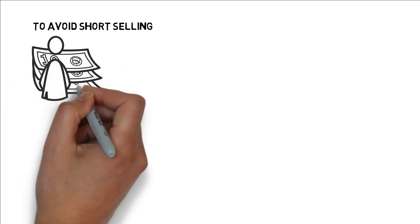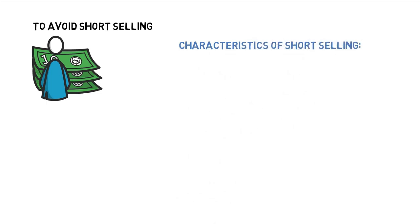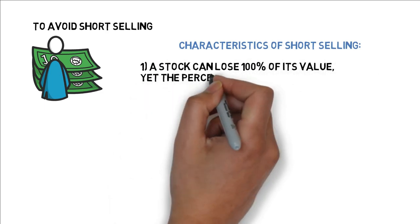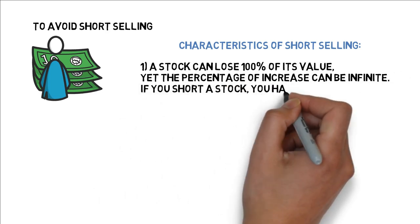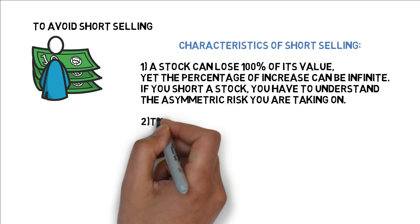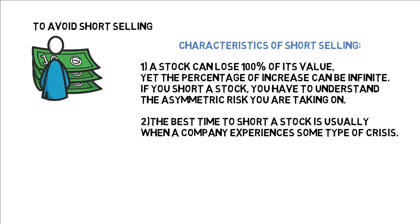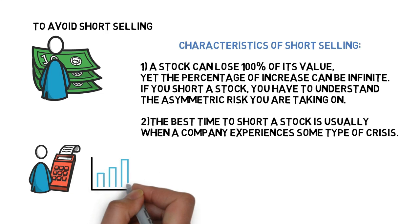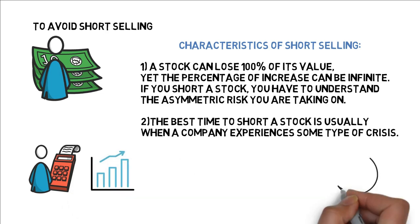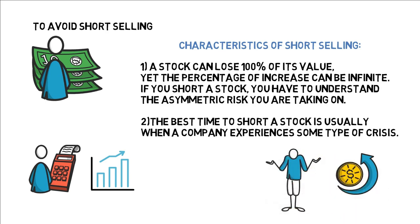He also advised others to avoid short selling like several other value investors like Manish Pabrai, Charlie Munger, and Guy Spear. These are three characteristics of short selling that people may overlook. Number one, theoretically a stock can lose 100% of its value, yet the percentage of increase can be infinite. If you short a stock, you have to understand the asymmetric risk that you're taking on. Number two, the best time to short a stock is usually when a company experiences some type of crisis, such as the discovery of accounting fraud, insolvency, or something else. Often, fraud exists for a long time in a company while the stock continues to increase, and since you have to pay interest when short selling, the pressure of a short squeeze may bankrupt an investment before the company goes under.